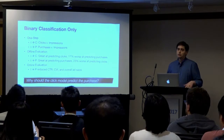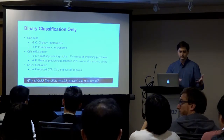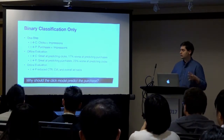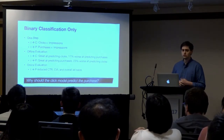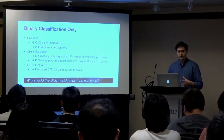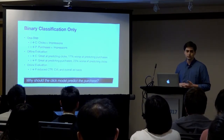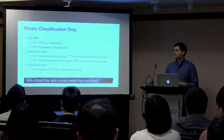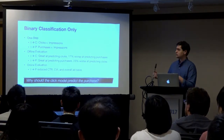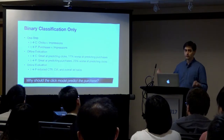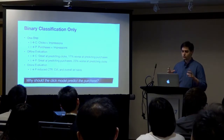We tried this idea and trained standard classification models — clicks versus impressions, and purchases versus impressions — using our offline logging data. The clicks-versus-impressions model did really well at predicting clicks, but was actually much worse at predicting purchases than a straightforward purchase prediction model. Then we tried predicting only purchases given impressions, and that was even worse at predicting clicks. So we have an interesting problem.